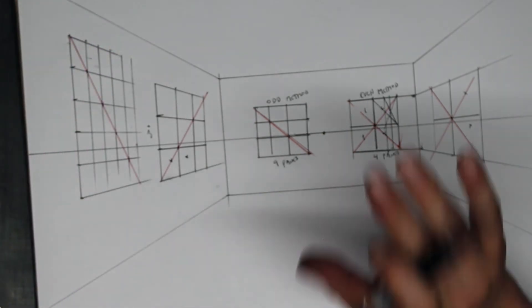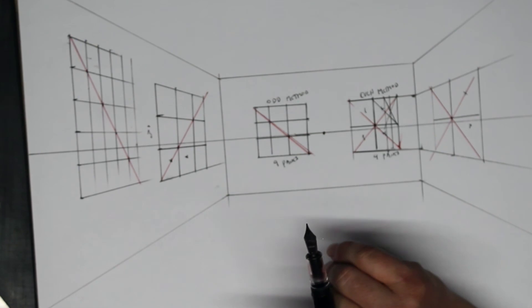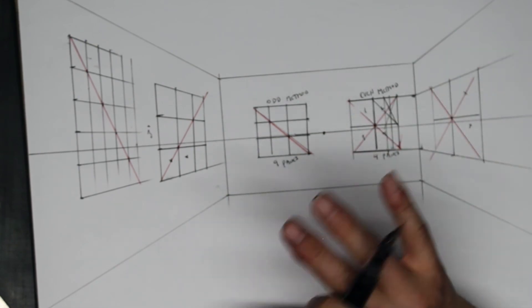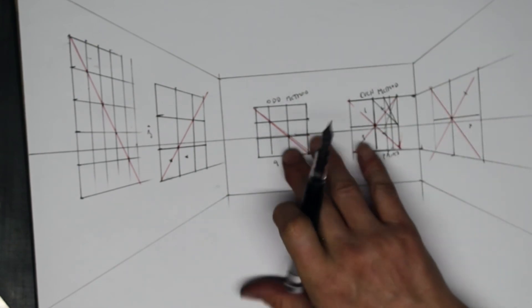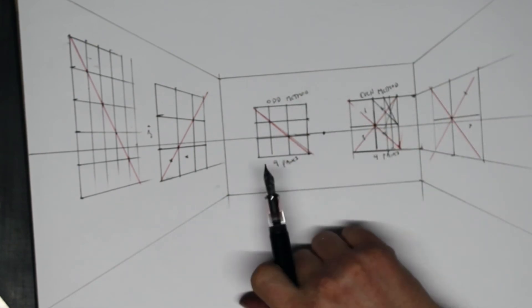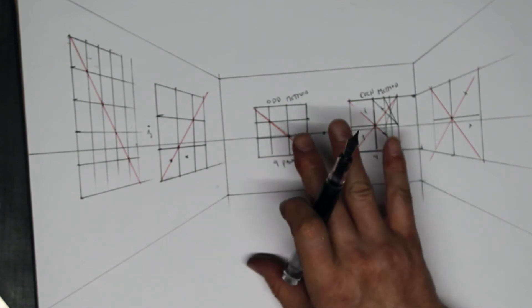We've used perspective to create a lot of different kinds of grids — lots of different methods for grid creation. These are the two most important ones. Remember them — we're going to be using them a lot.